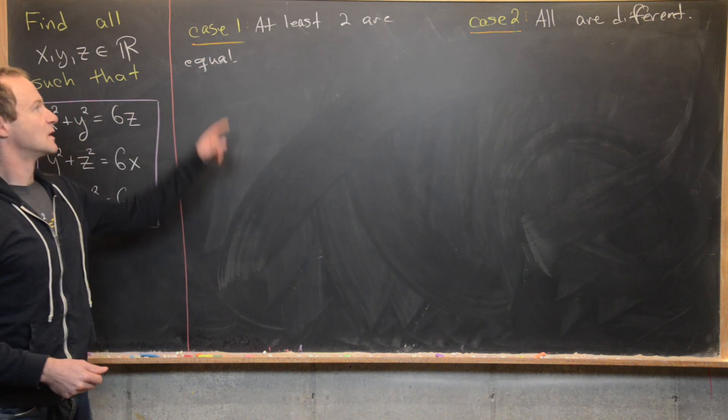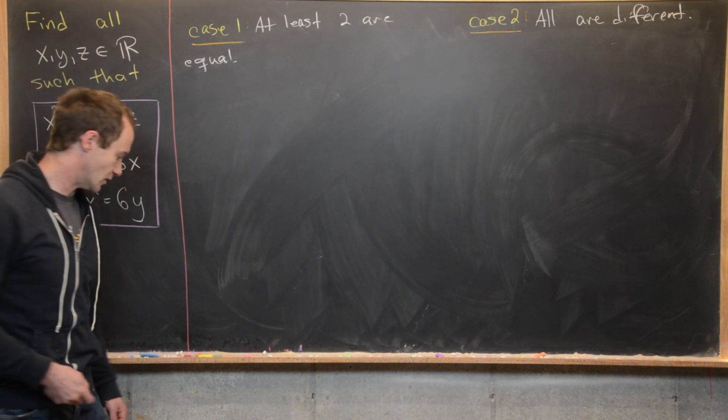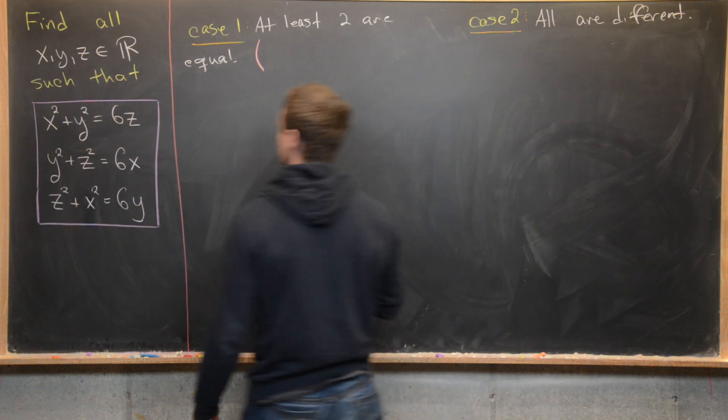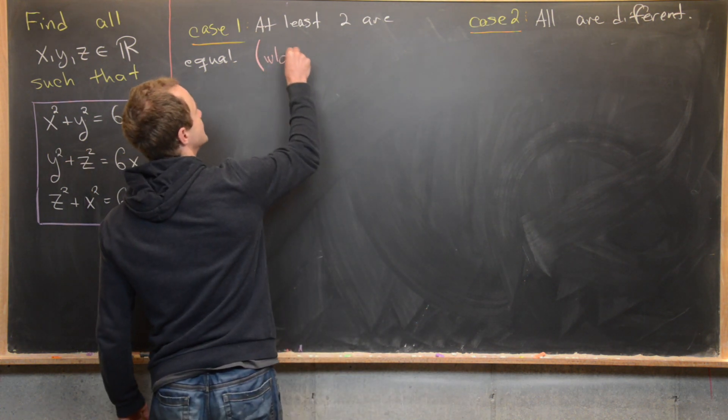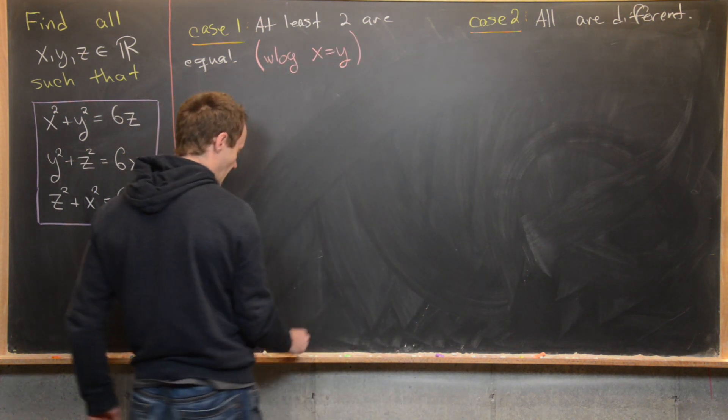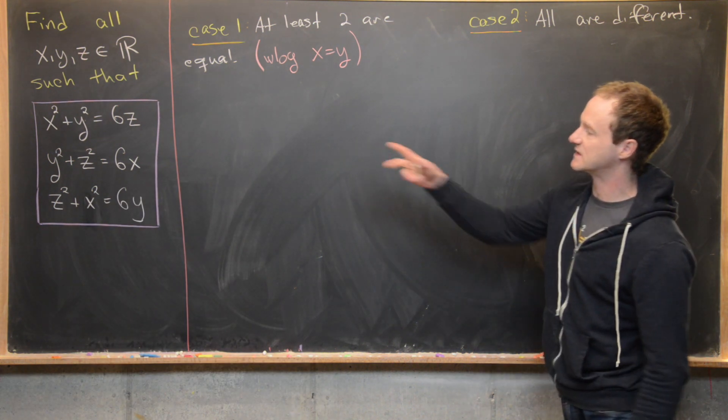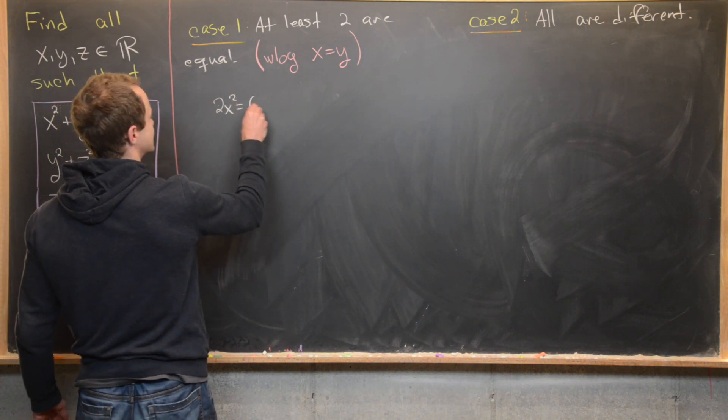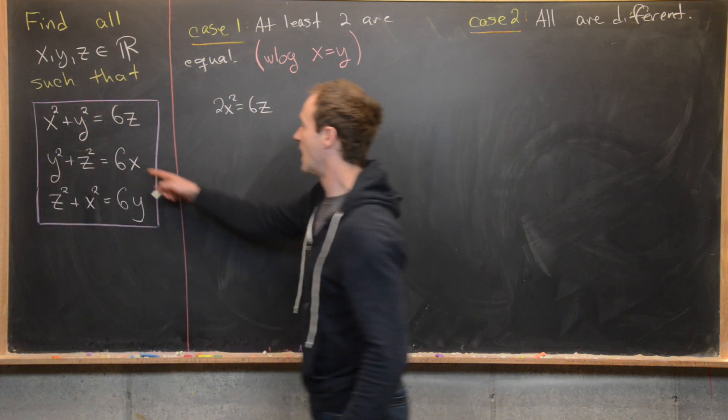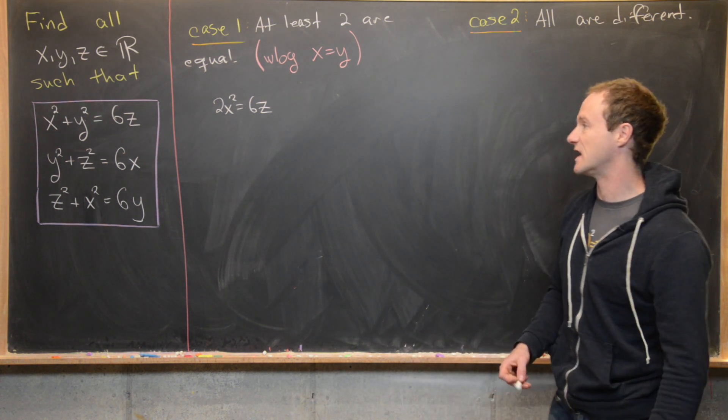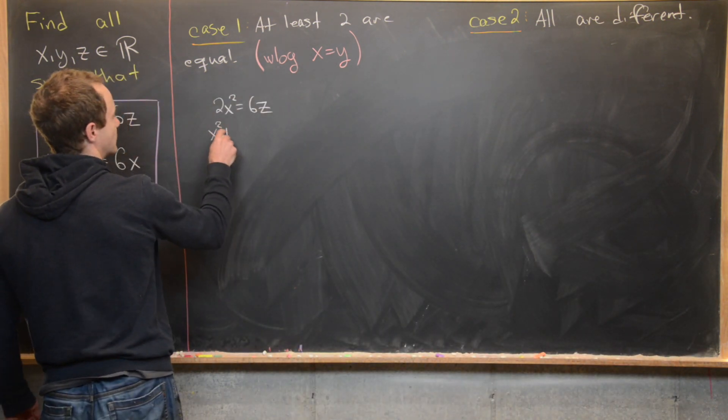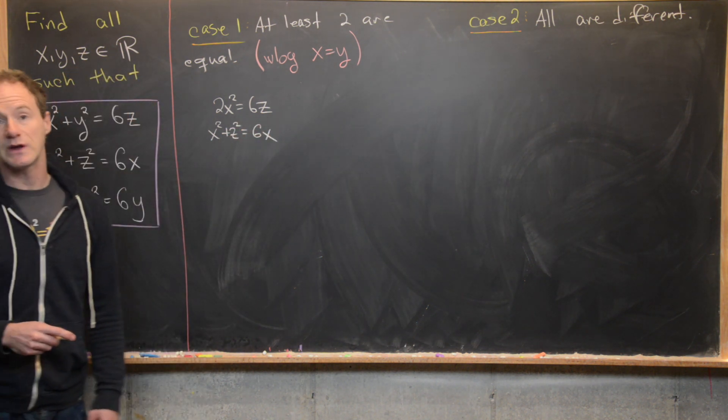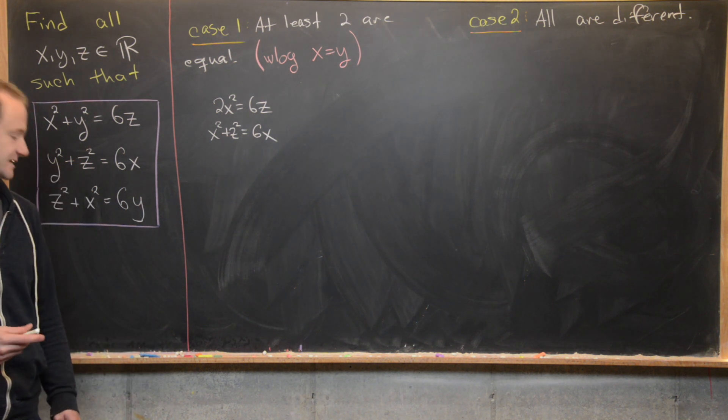Let's look at this first case where we have at least two of them are equal. Notice that because of the symmetry between x, y, and z in our system of equations, we can assume that x is equal to y. So now let's see what that does to our system of equations. This first equation will now be 2x² = 6z, and then the second two equations are exactly the same: x² + z² = 6x. So now we've got a system of two equations and two unknowns, which is maybe a little bit easier to deal with.